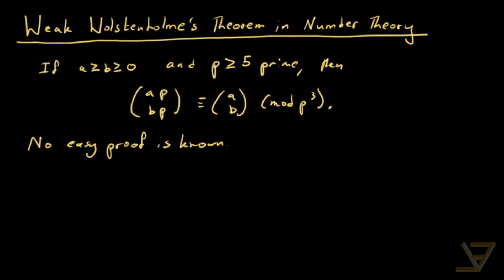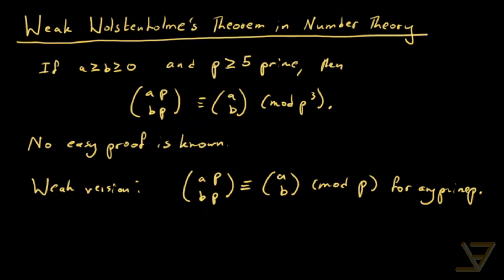So what we're going to do is prove a weaker version of this, which is that a p choose b p is congruent to a choose b mod p for any prime p. So it's not strictly weaker because here we have p greater than or equal to 5, whereas here p could be 2 or 3. So there is the added benefit of this being true for the numbers 2 and 3 as well.